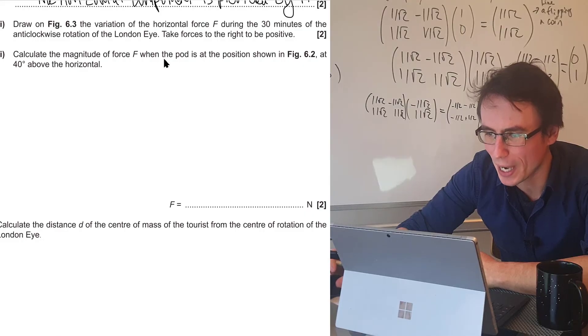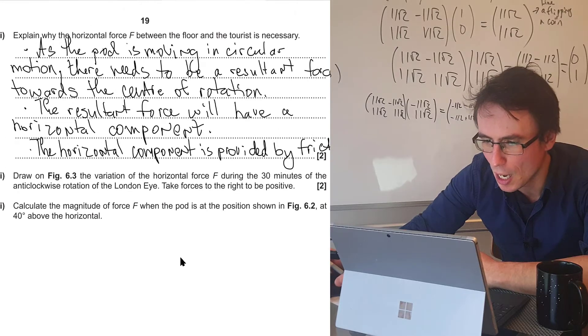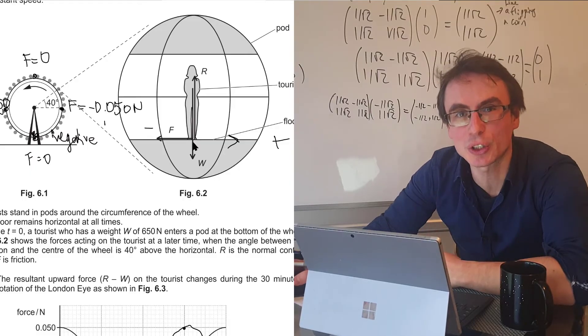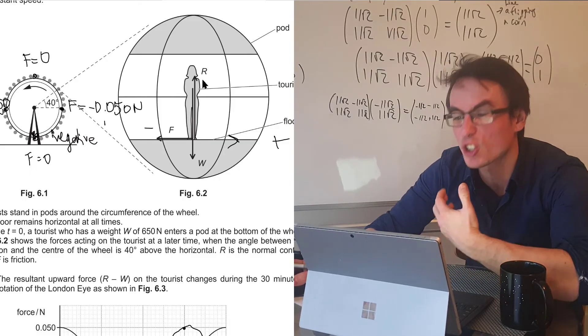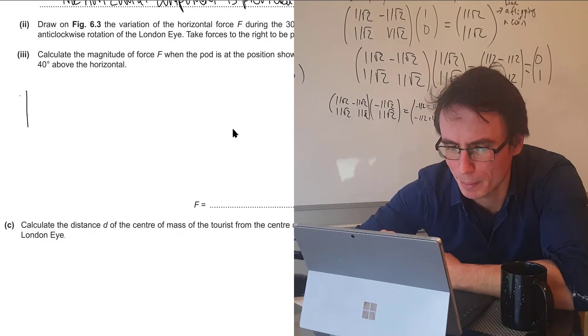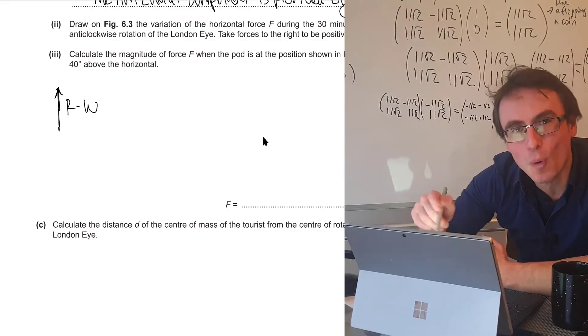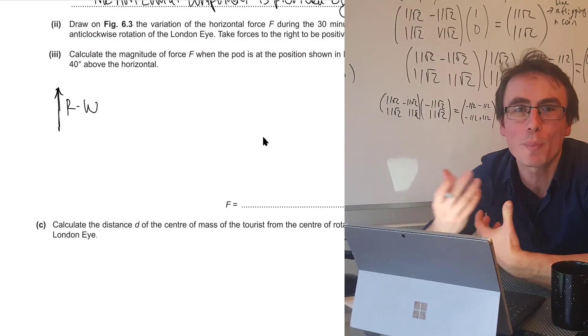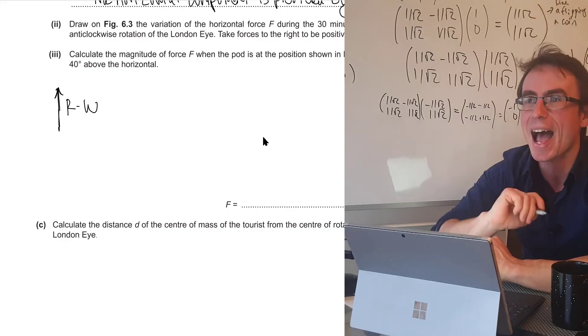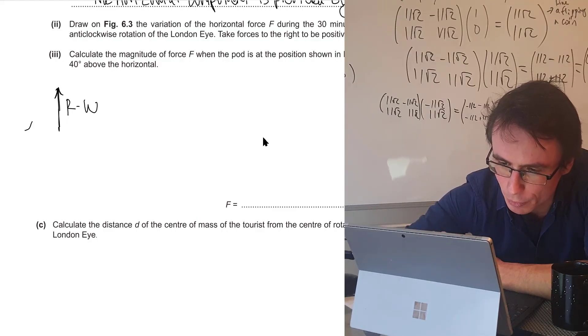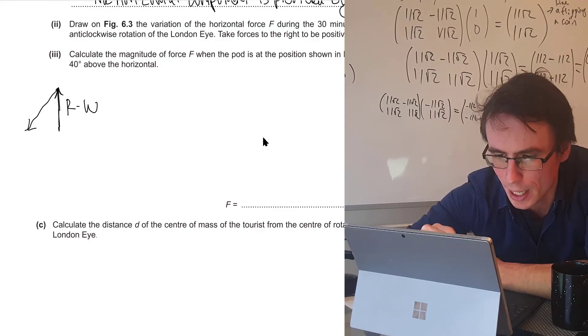Part three, calculate the magnitude of the force F when the pod is in the position shown in figure 6.2 at 40 degrees above the horizontal. Those two forces in the vertical direction will leave a resultant force, which is just R takeaway W. And this will have some magnitude that I can draw across here. The resultant centripetal force will always be equal to 0.050 newtons as the wheel is rotating. So we can just draw a vector which will be going this way. This will have a magnitude of 0.050 newtons.